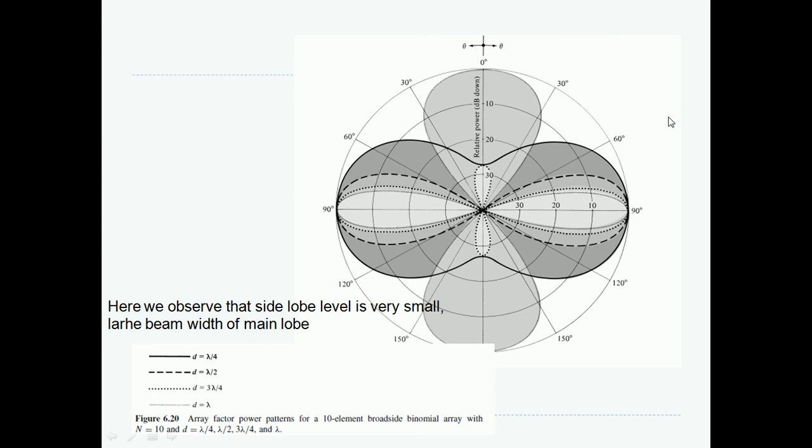Here you can see the binomial array radiation pattern for a 10-element broadside binomial array. They are varied for different distance d: lambda by 4, lambda by 2, 3 lambda, and lambda. Here you can see that, for example, let us take lambda by 4. What you can see here is that there is no side lobe at all. For lambda by 4 is a darker line and you can see that this particular light color line does not have any side lobes.